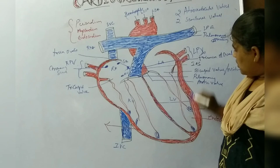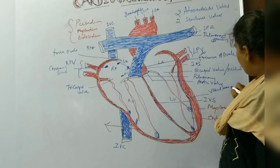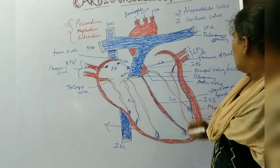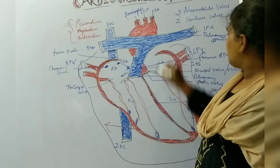Here we have another layer which is the visceral serous membrane, also known as the epicardium. The outermost layer is the pericardium.